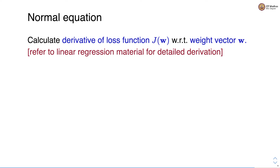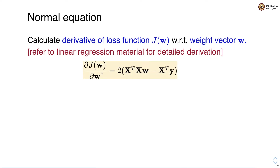We can minimize the loss in two ways: one is the normal equation and the second is gradient descent. In both approaches, we first calculate the derivative of the loss function with respect to the weight vector. Please refer to the linear regression material for the detailed derivation. The derivative of the loss with respect to the weight vector is given as 2 times X transpose X W minus X transpose Y.